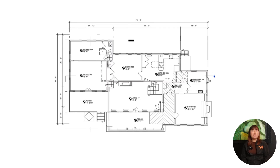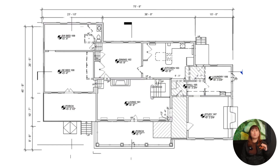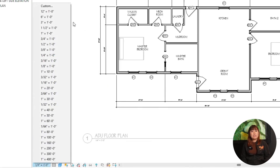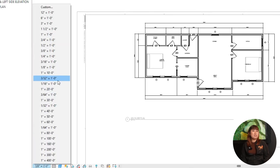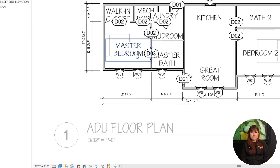First, let's talk about understanding scale dependency of annotations. Revit's annotation elements, like dimensions and text, are scale dependent. When you change the view scale, annotations adjust proportionally. Open your floor plan view, set the scale to 1 to 100, then change it to 1 to 250. You'll see that the annotations appear larger. This keeps them readable at any zoom level.